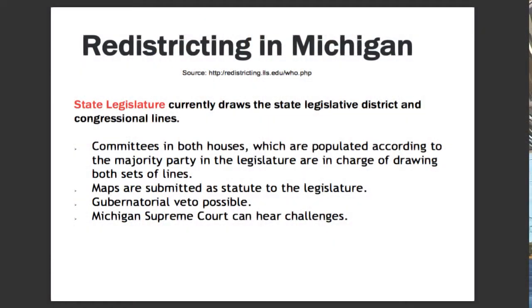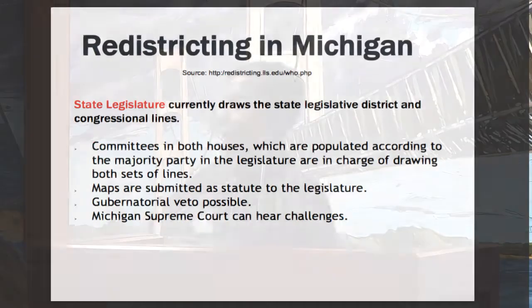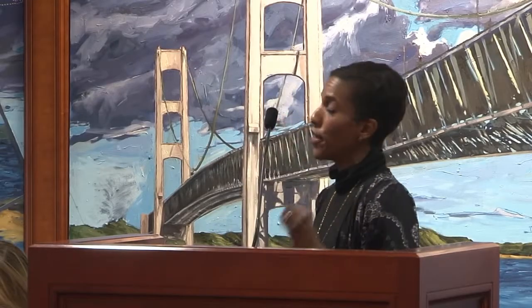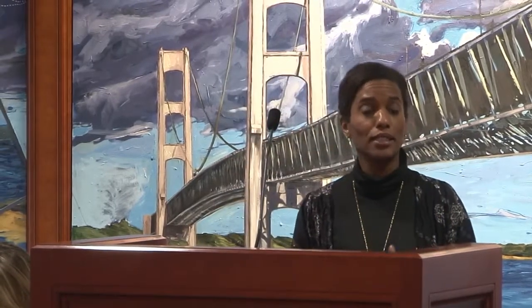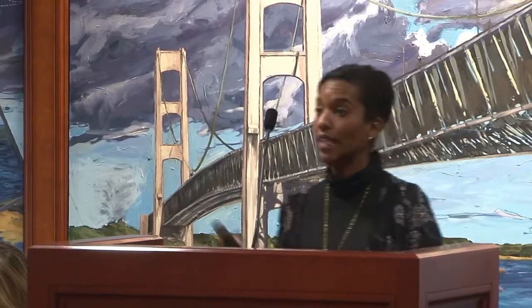In Michigan, as Richard and Corey have said, we have a state legislature that is primarily responsible for drawing the state legislative district lines and the congressional lines. Committees are formed in each house — the Senate and the House — every decennial census, and they are populated according to the majority party. That basically means every ten years, depending on the last election, those seats are allocated in those committees based on party lines.